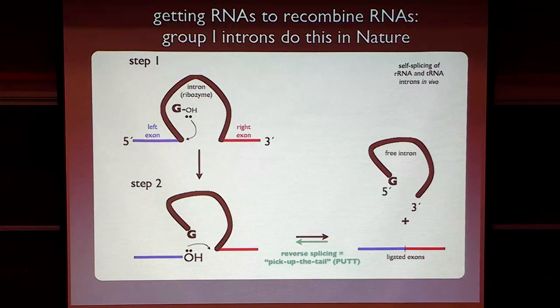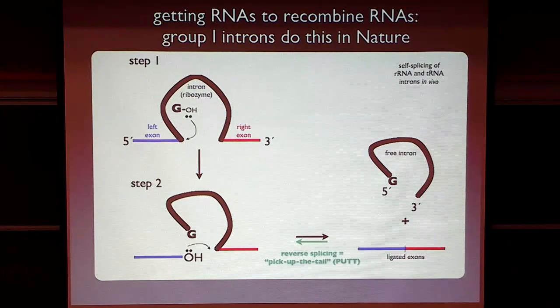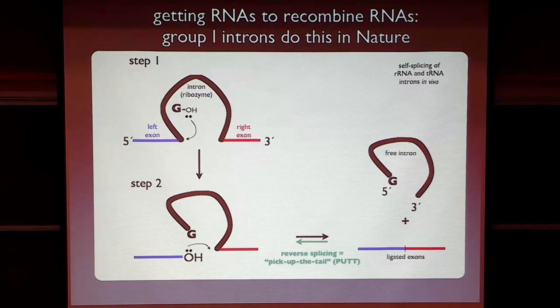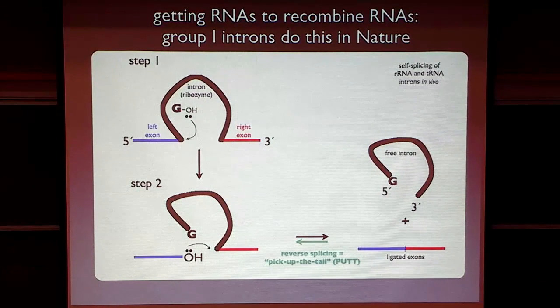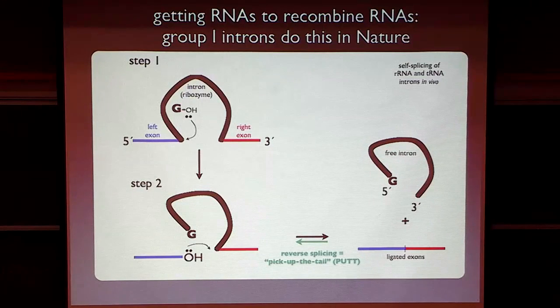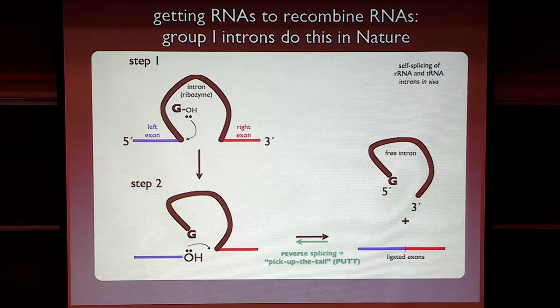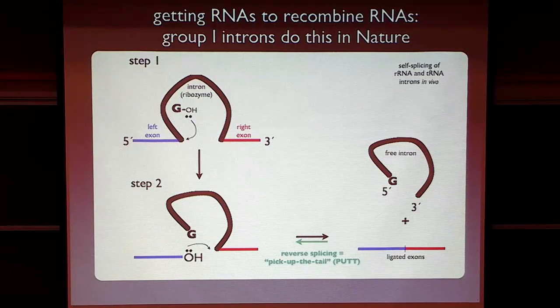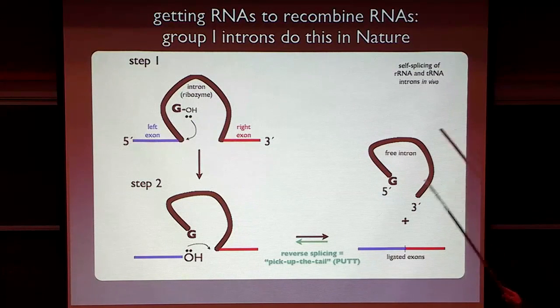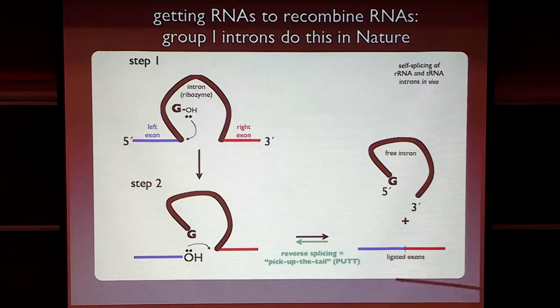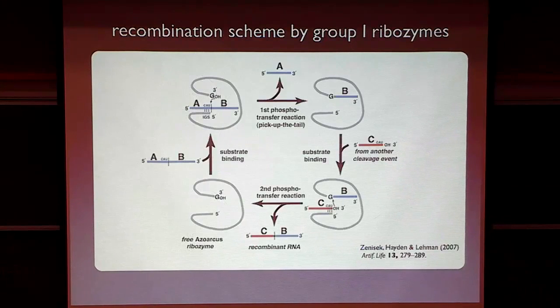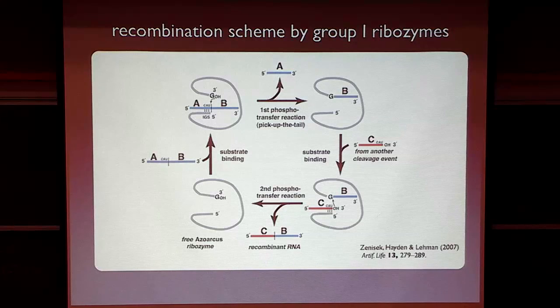So we took advantage of this disproportionation reaction, this recombination reaction, and we also took advantage of the fact that enzymes, by their very nature, can catalyze the forward step of a reaction as pretty much equally well as the reverse of a reaction to make a generalized recombination system out of a group 1 intron.